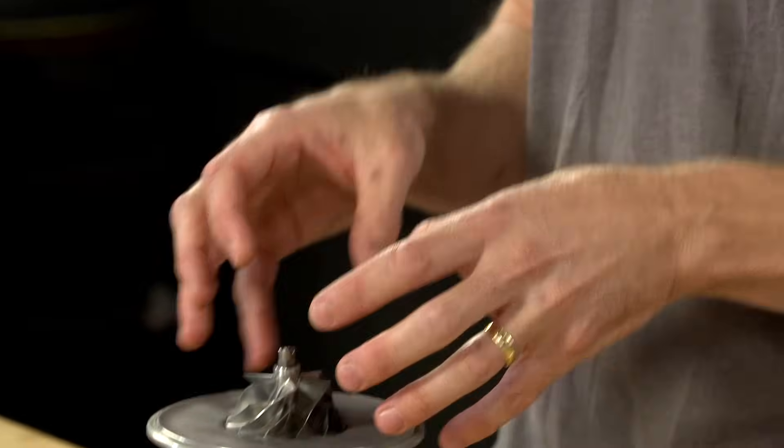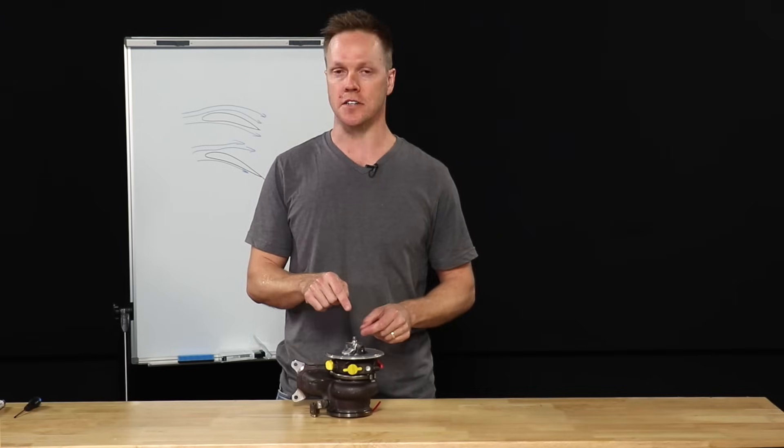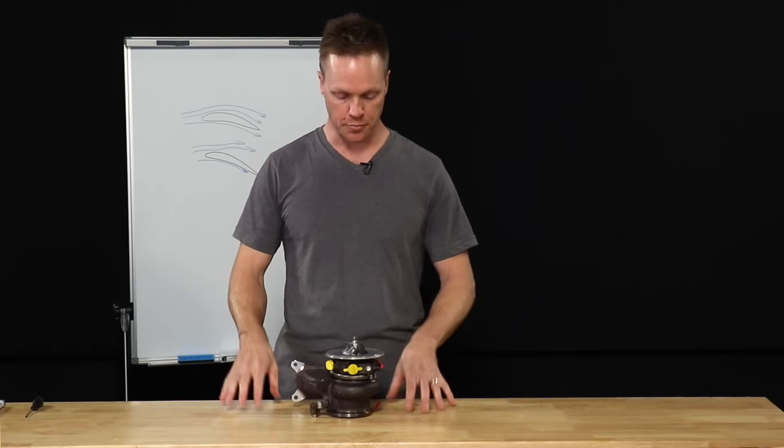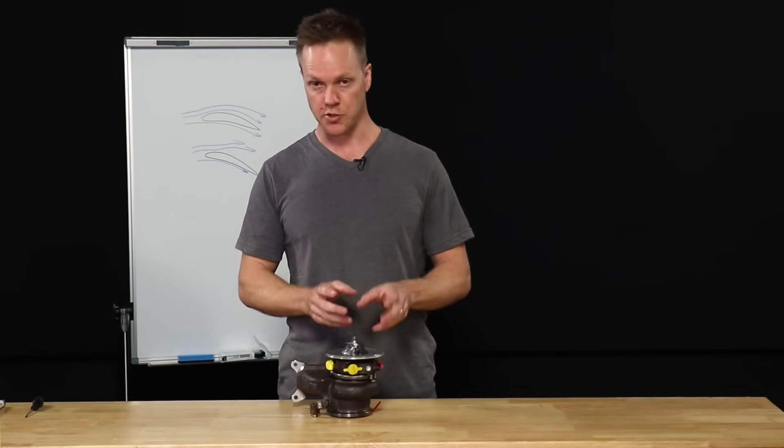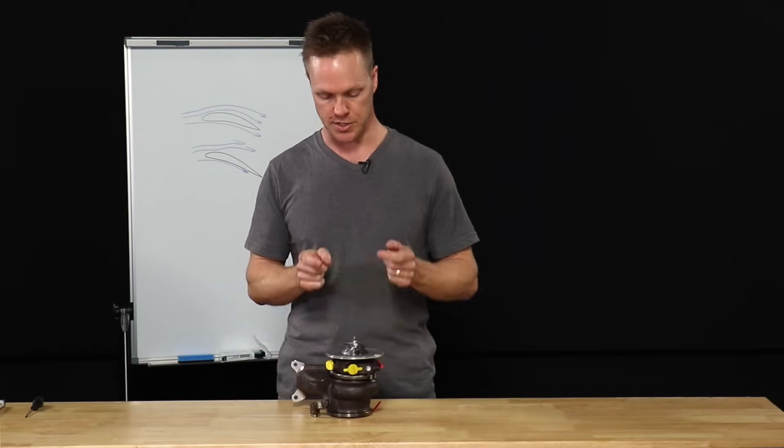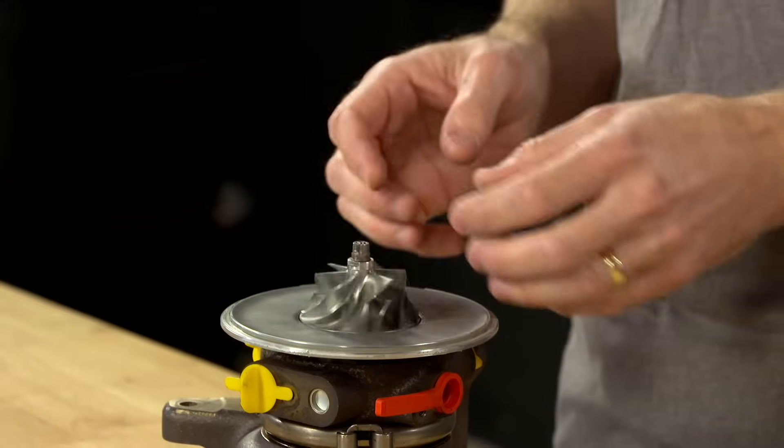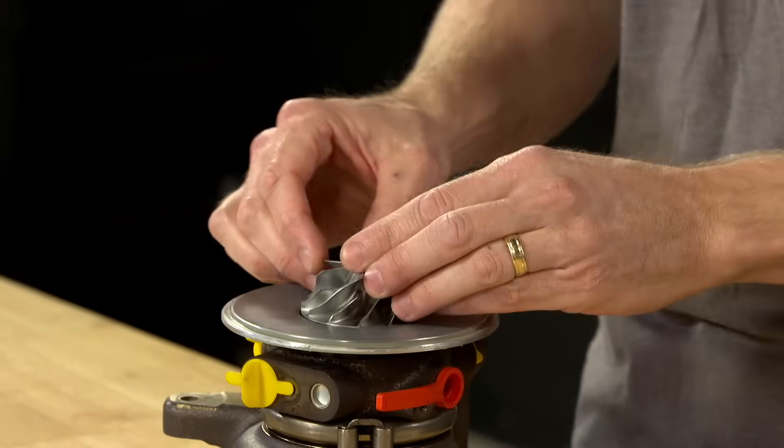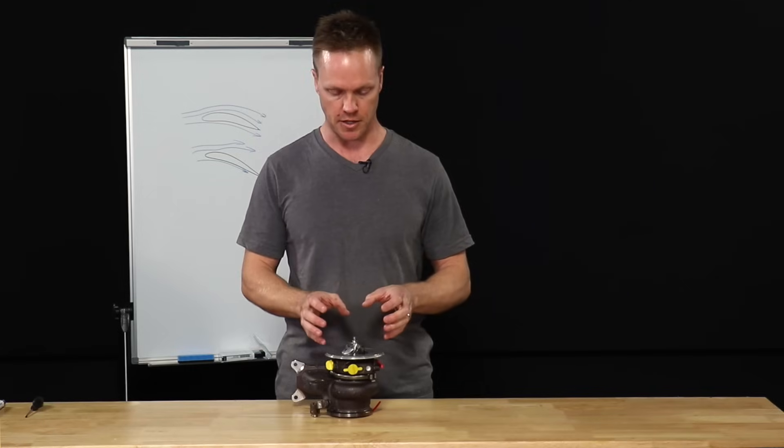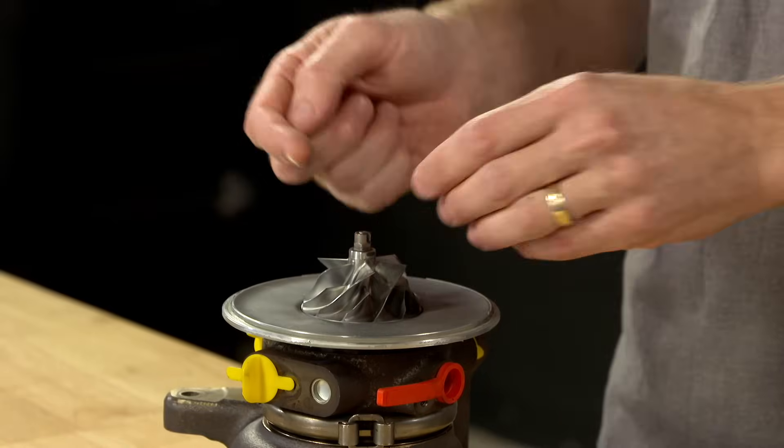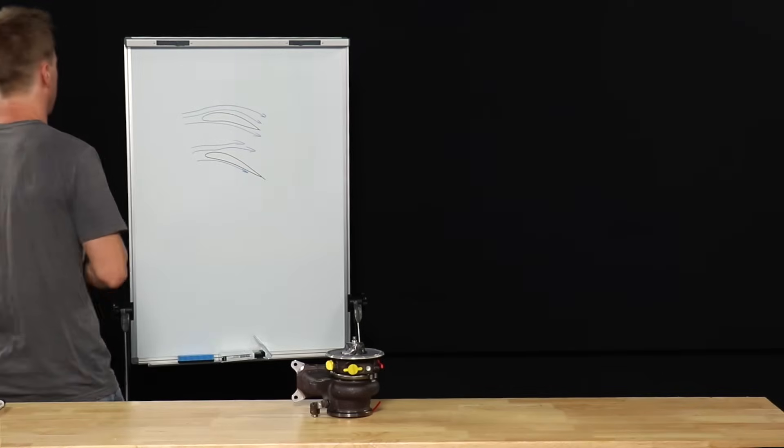So that's what actually causes surge, but what is happening inside the turbo when it sounds like a giant turkey? So technically compressor surge is a condition where the blades on the compressor wheel stall. Now that's a confusing term because stalling when you're talking about a rotating device kind of implies that it's actually stopping. It doesn't stop rotating, it doesn't spin backwards or anything like that. We're talking about stall in terms of an aerodynamic sense.